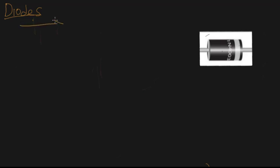Our topic today is diodes. A diode is a semiconductor device that conducts current only in one direction but does not conduct current in the opposite direction. It only allows the flow of current in one direction.